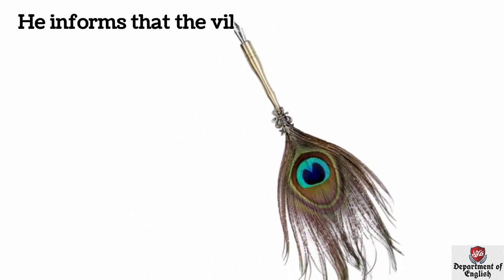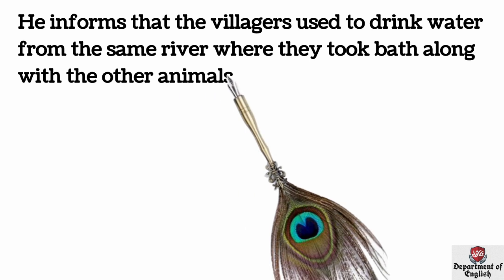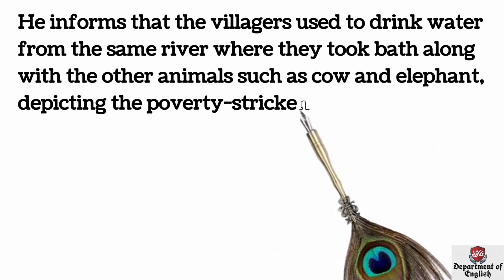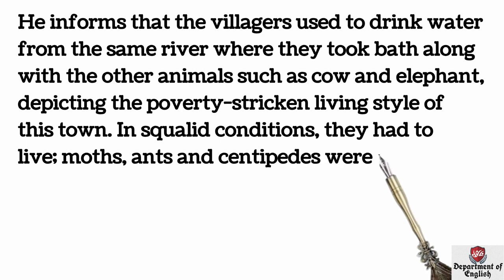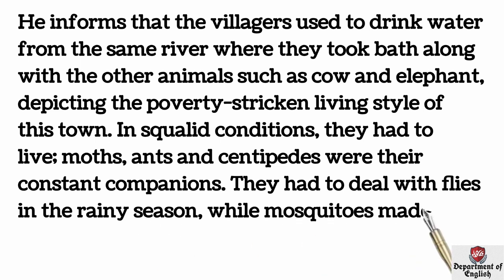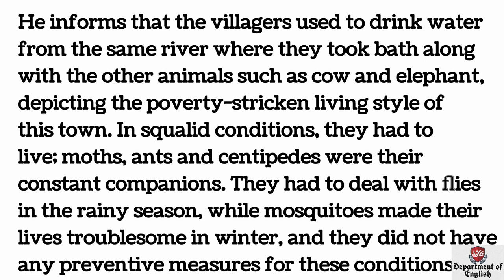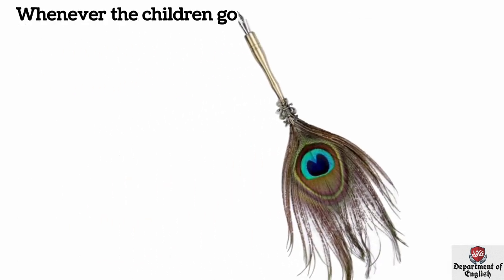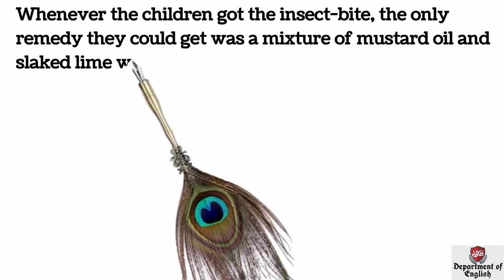He informs that the villagers used to drink water from the same river where they bathed along with other animals such as cows and elephants, depicting the poverty-stricken living style of this town. In squalid conditions, moths, ants, and centipedes were their constant companions. They had to deal with flies in the rainy season, while mosquitoes made their lives troublesome in winter, and they did not have any preventive measures. Whenever children got an insect bite, the only remedy was a mixture of mustard oil and slaked lime, which was worse than the disease itself.